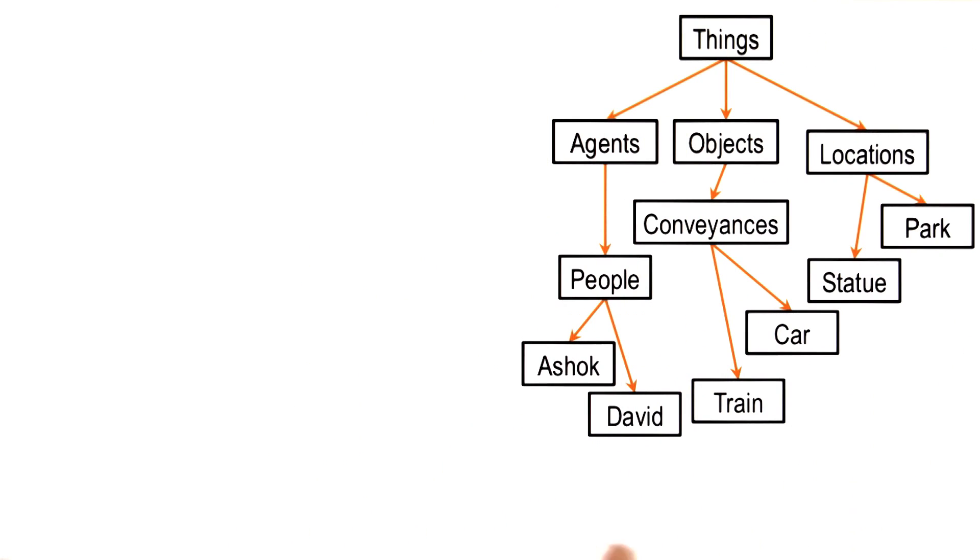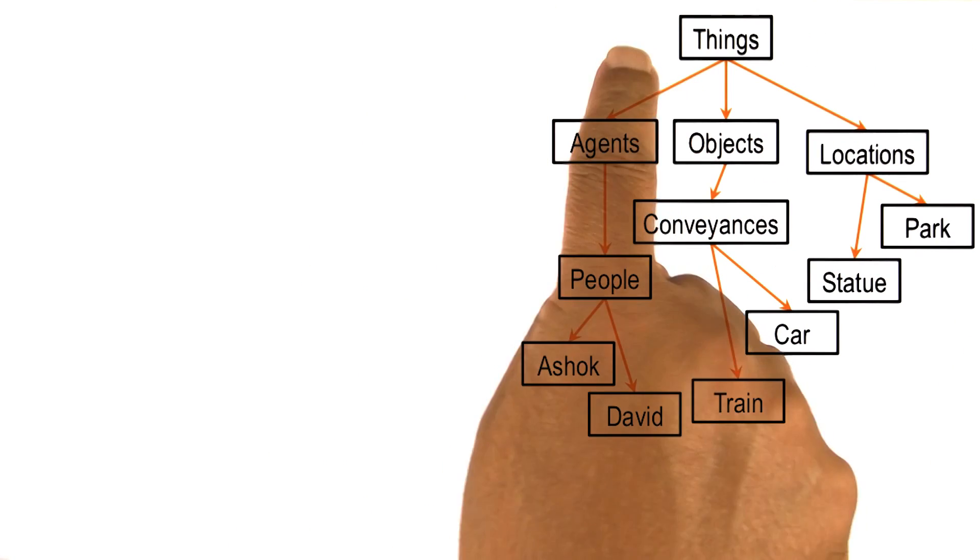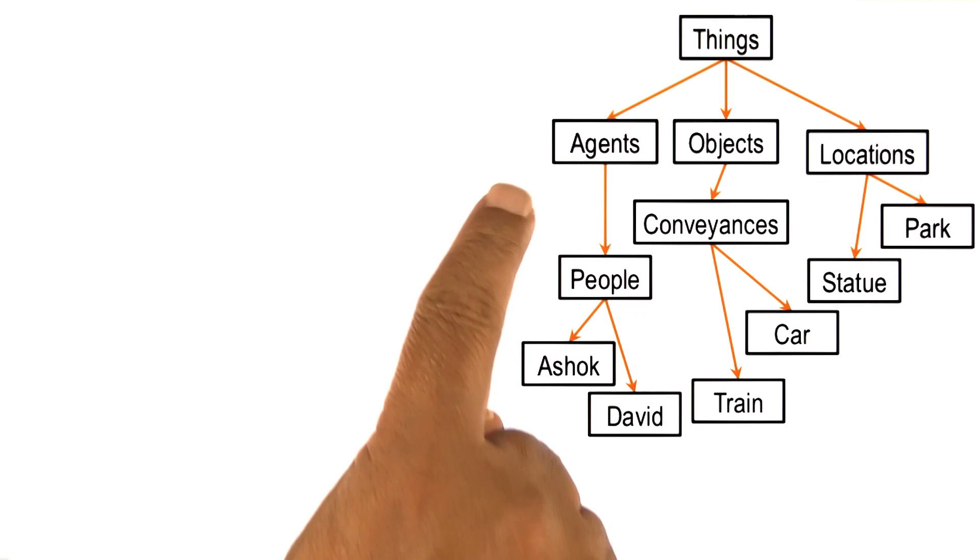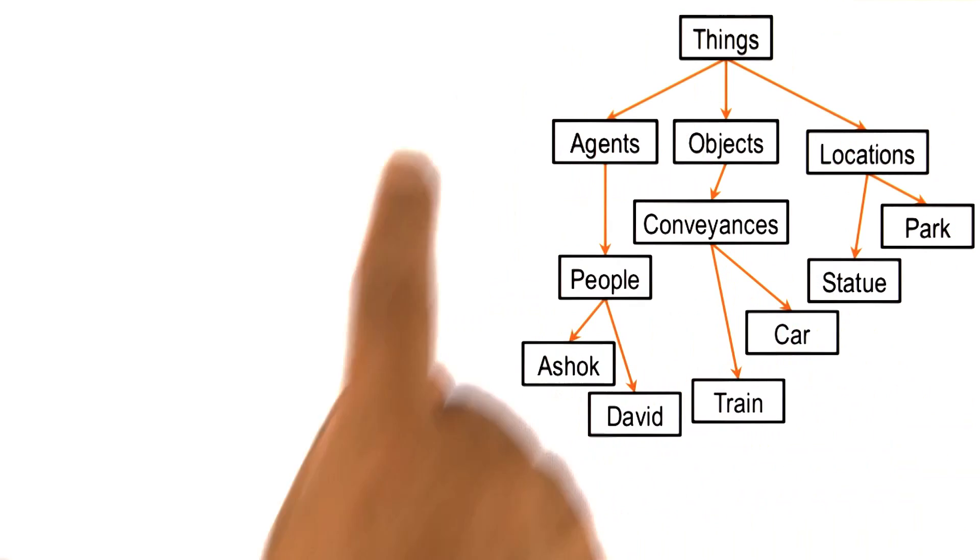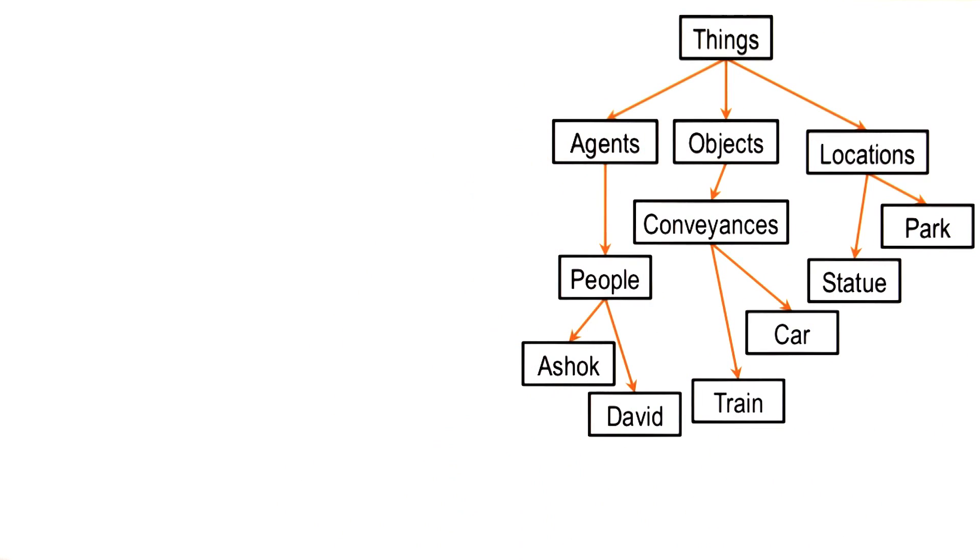So let us suppose that the agent has this ontology of the world. The world is composed of things, and things can be agents or objects or locations. Agents are people, and Ashok and David are examples of agents. Objects can be conveyances, and trains and cars are examples of conveyances. Obviously, this is a very small part of someone's ontology about the world.